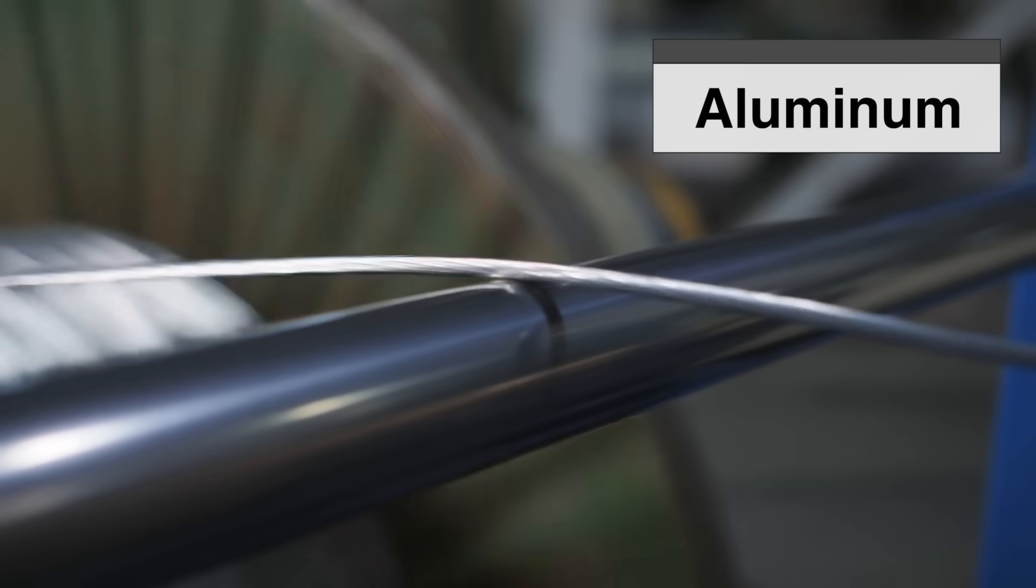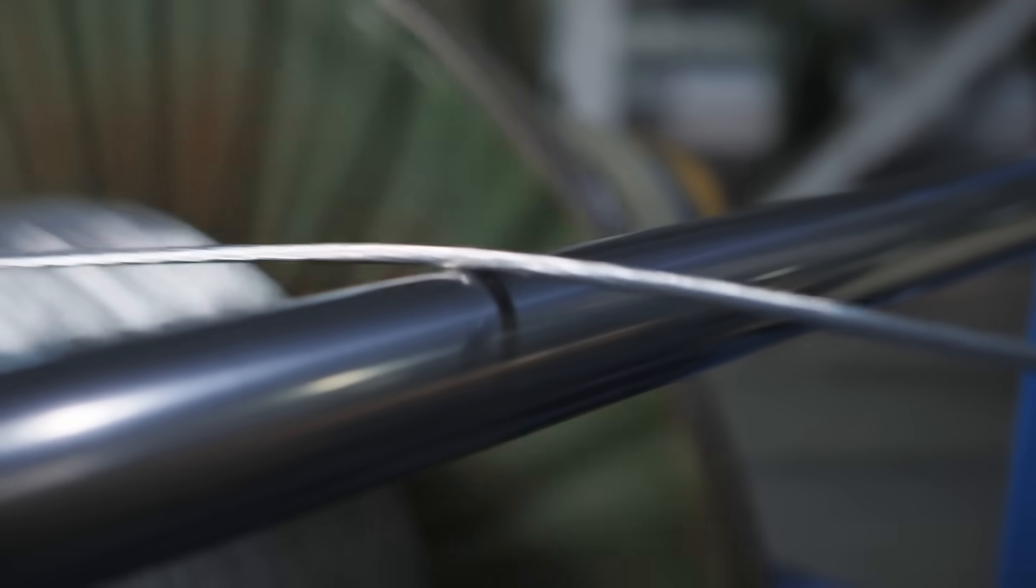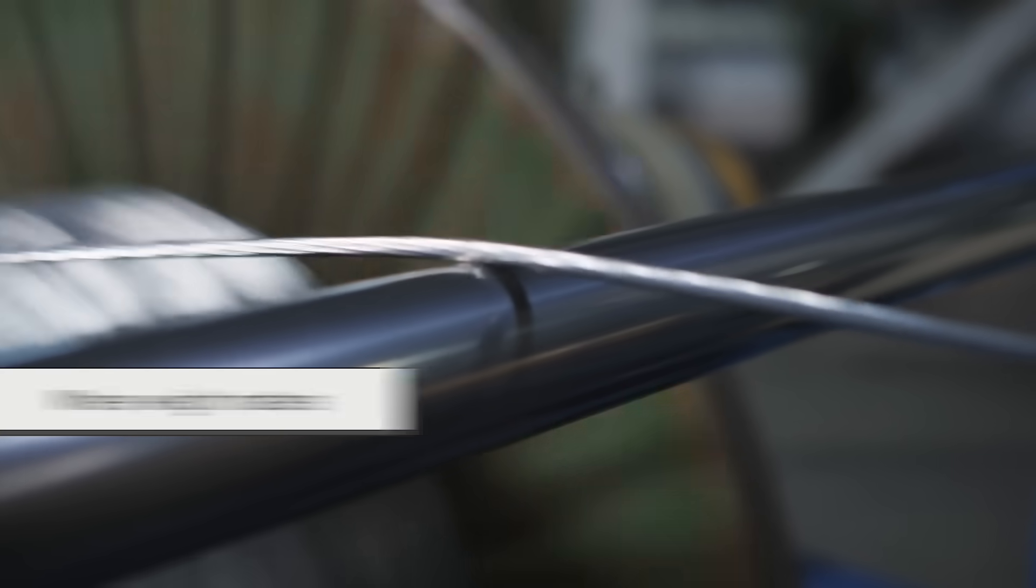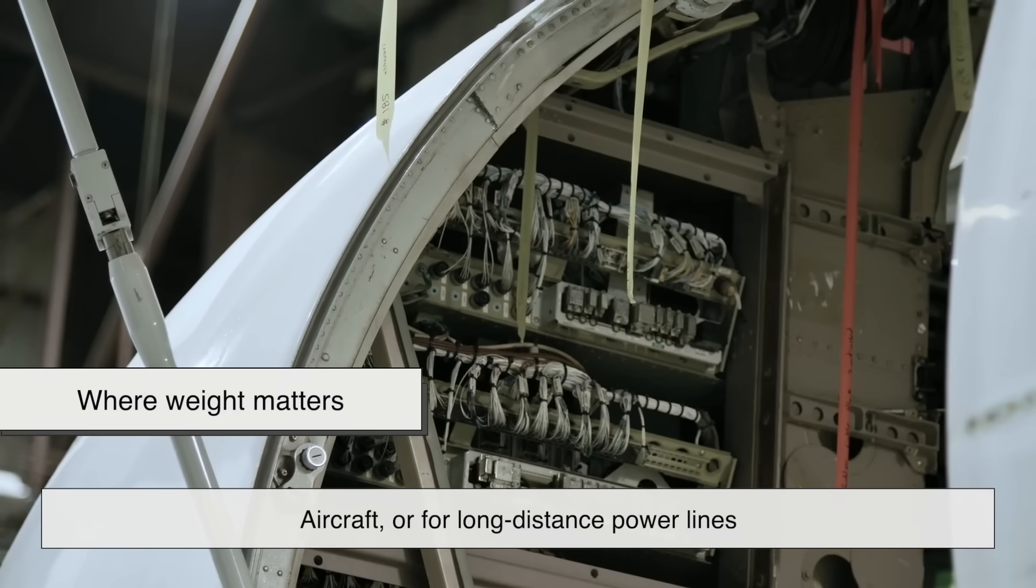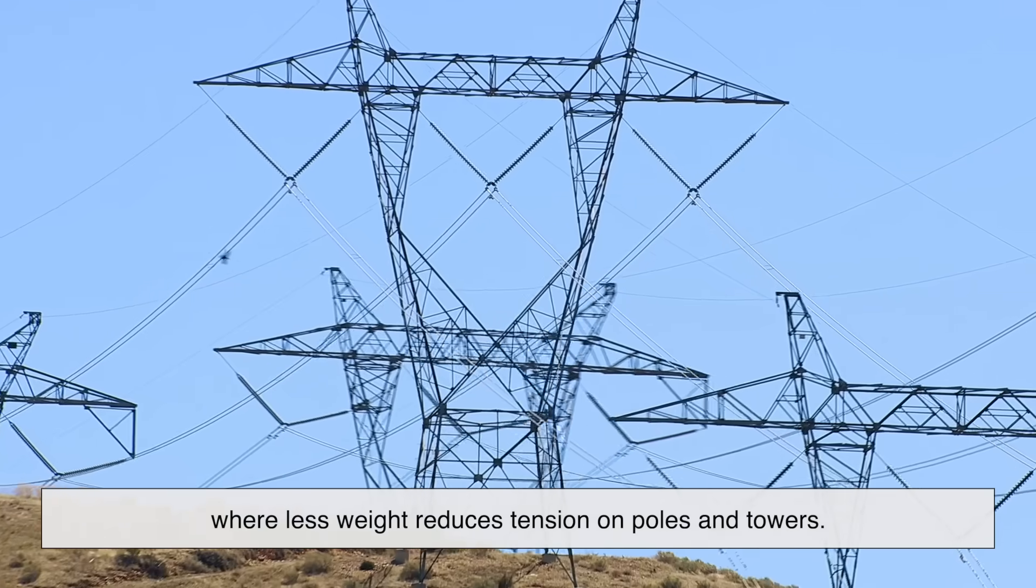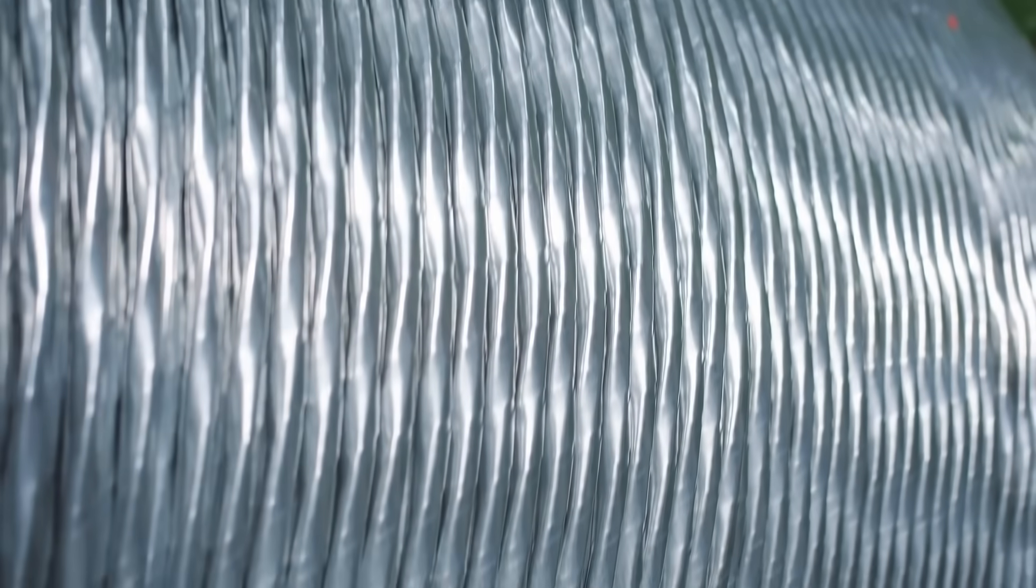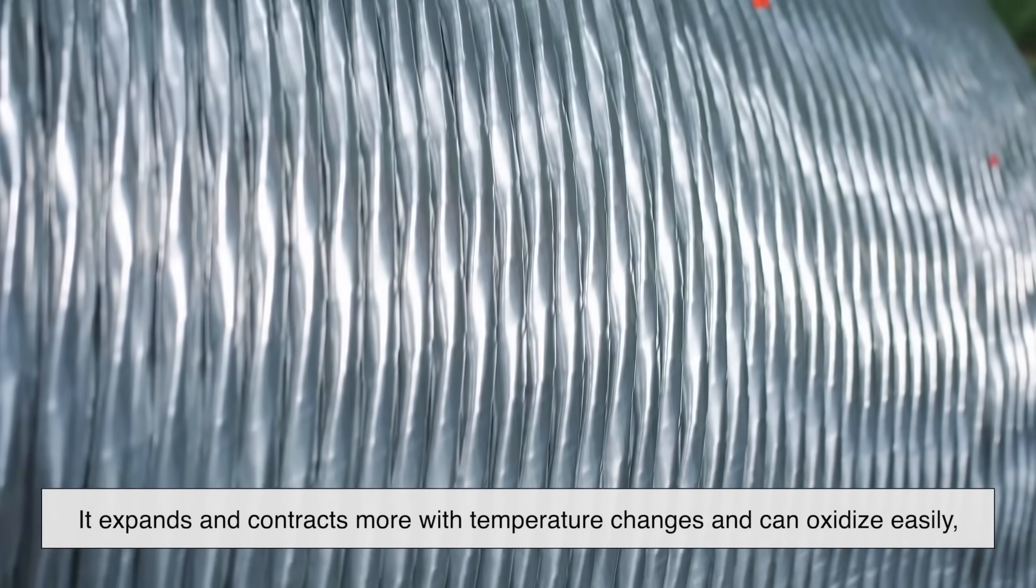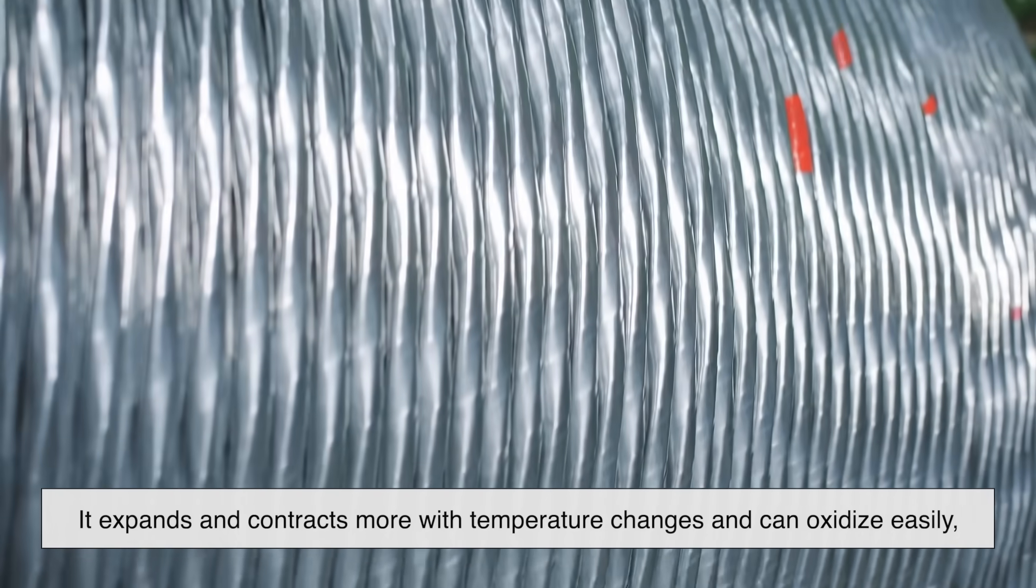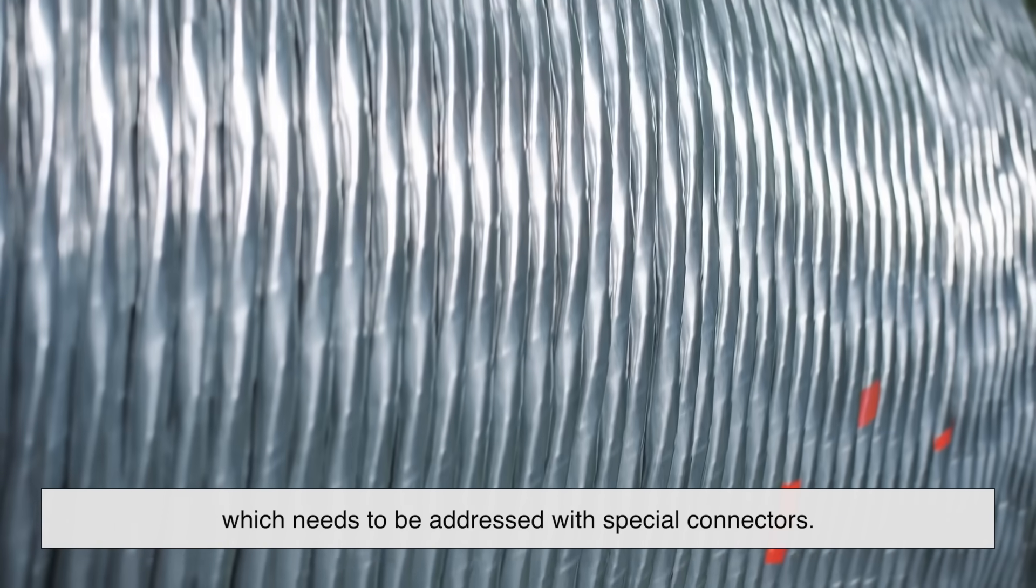Aluminum is a bit different. It's not as conductive as copper, but it's much lighter. This makes it ideal for applications where weight matters, like in aircraft, or for long-distance power lines, where less weight reduces tension on poles and towers. However, it has its drawbacks too. It expands and contracts more with temperature changes and can oxidize easily, which needs to be addressed with special connectors.